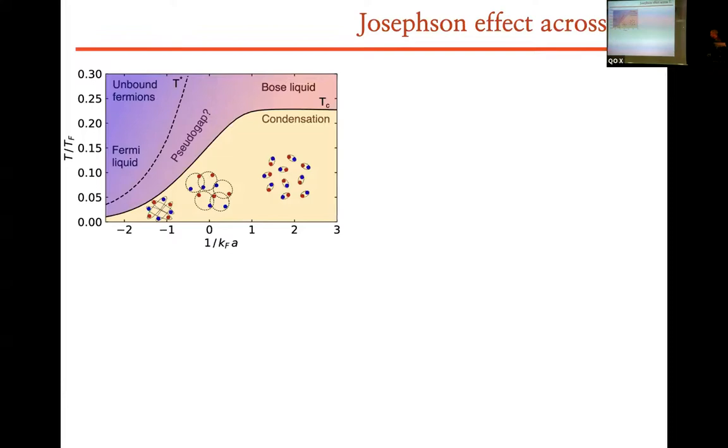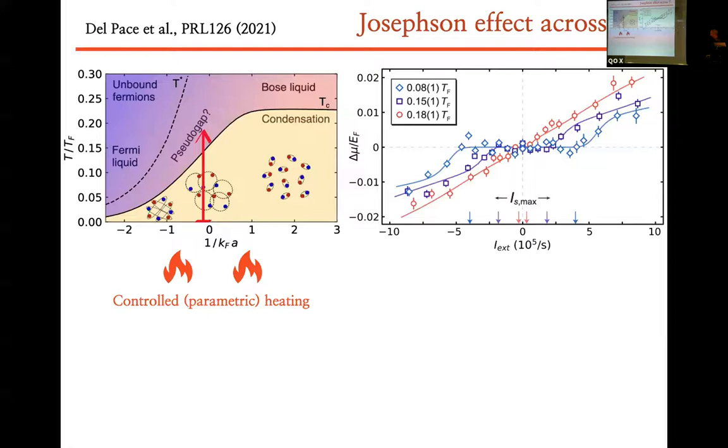We have this typical phase diagram. This is temperature, one over KFA. This is the BCS limit, this is the BEC limit, this is unitary limit. So far, I showed you some data in this area here. But of course, what we can do is also to try to increase the temperature and see what happens. This can be done by parametric heating. We concentrate on the unitary limit, and then we heat up the system and we do the same measurement.